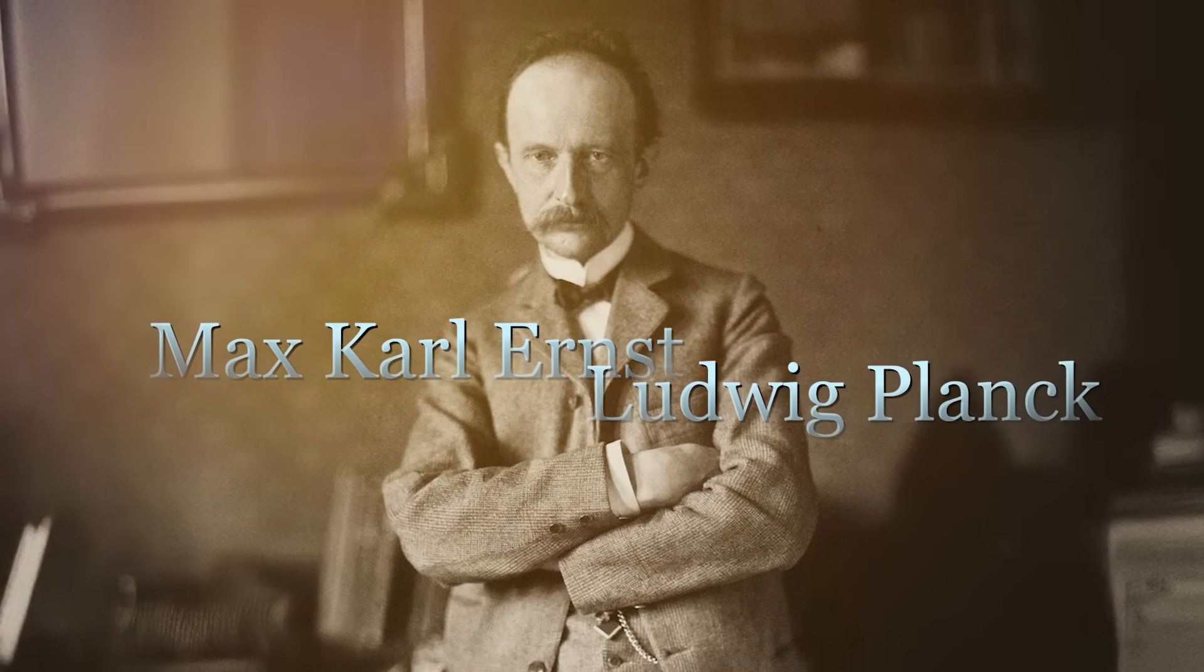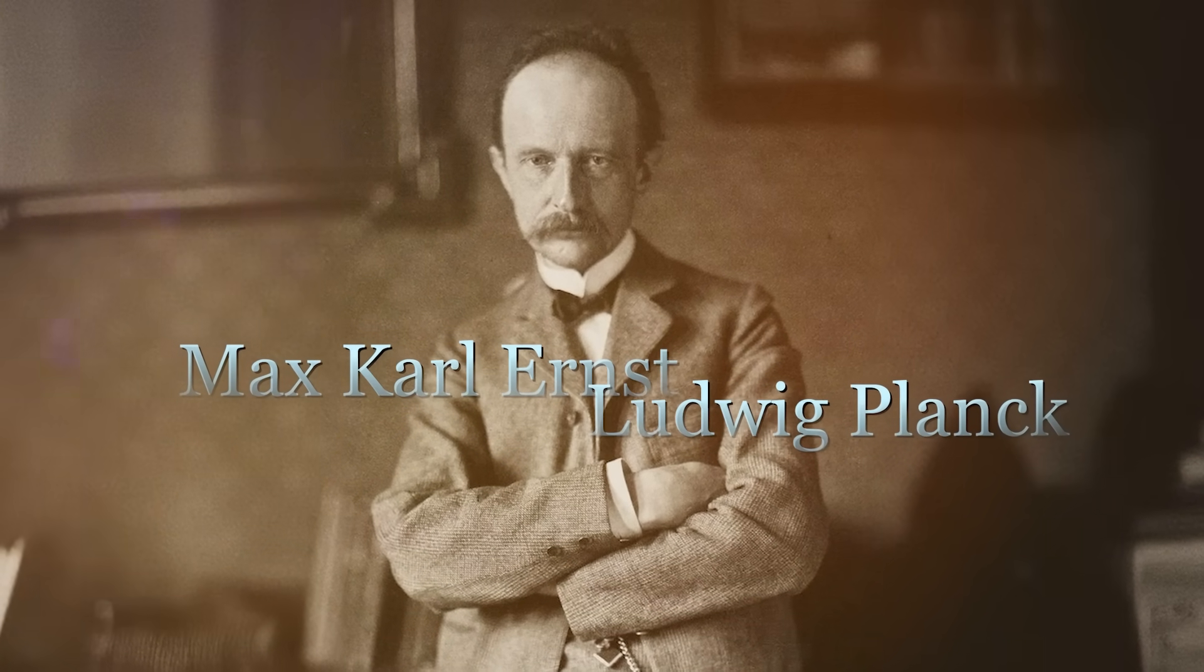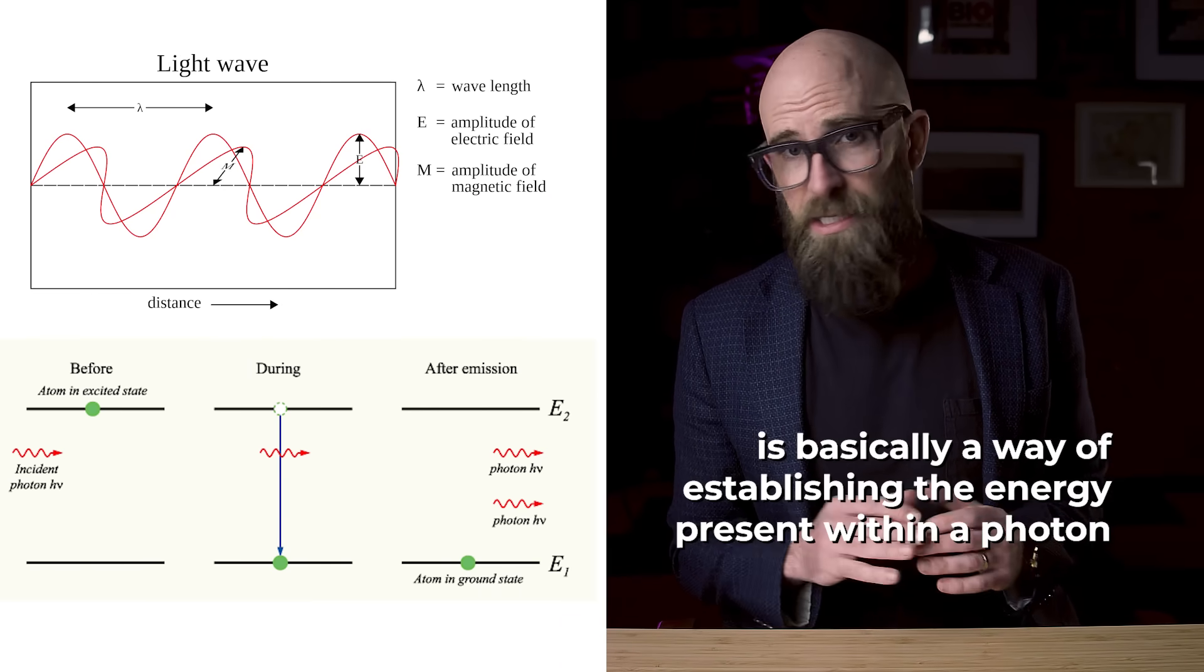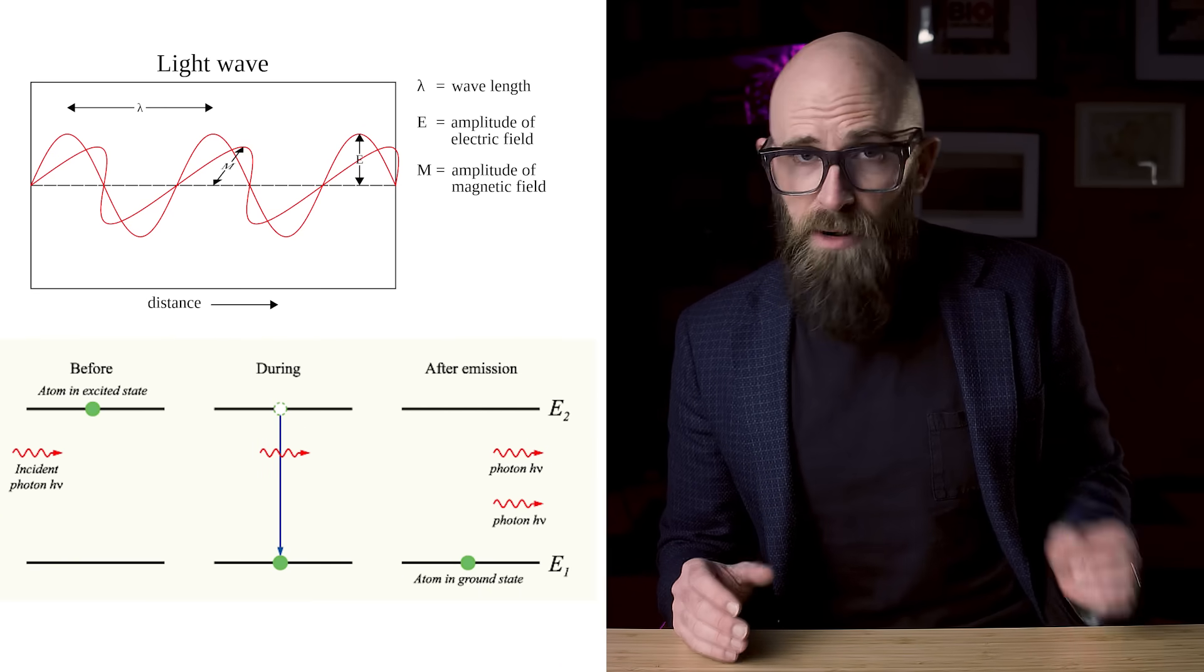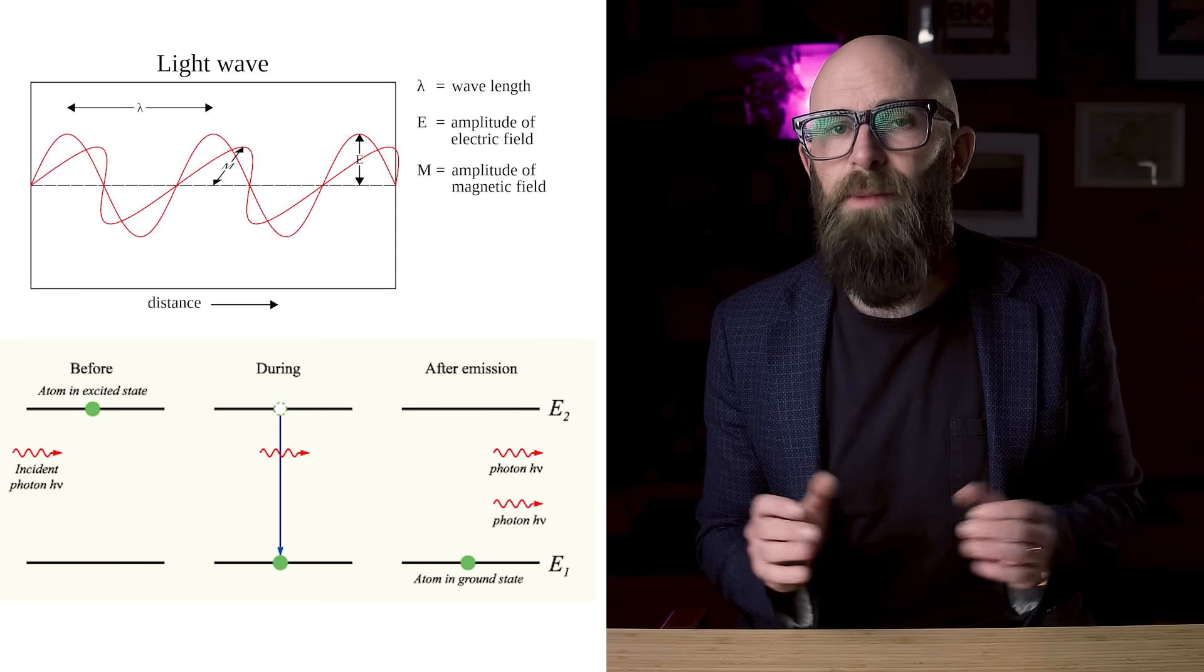Planck's constant is basically a way of establishing the energy present within a photon, a massless elementary particle that is responsible for electromagnetic radiation like visible light or radio waves. Take the frequency of an electron, with a high frequency corresponding to things like gamma rays or x-rays and a low frequency corresponding to, say, radio waves, and multiply it by Planck's constant - and boom! You now know how much energy is contained in that electron.